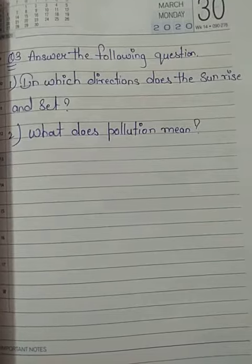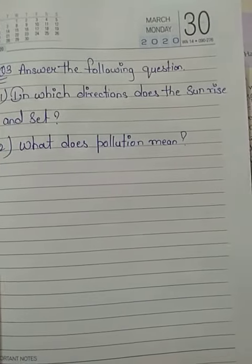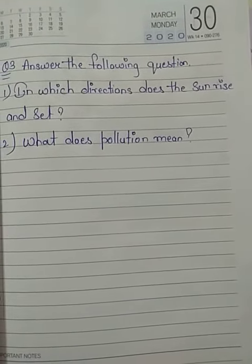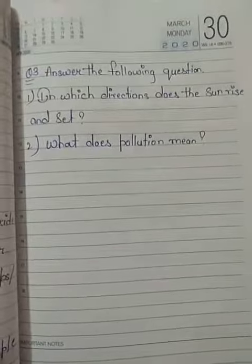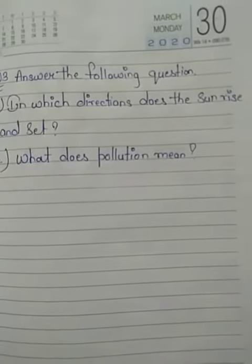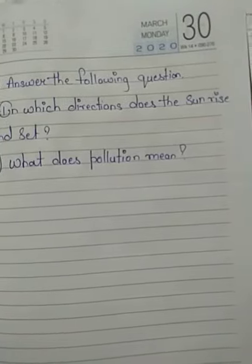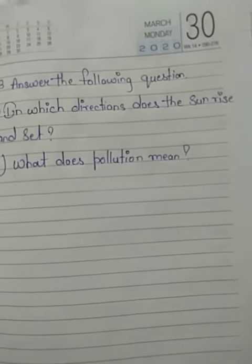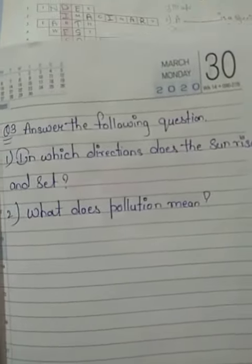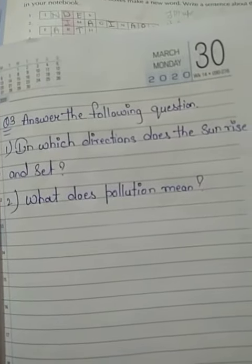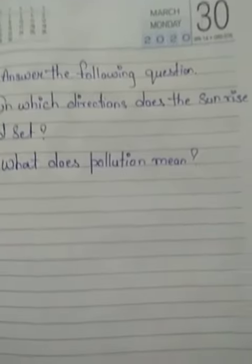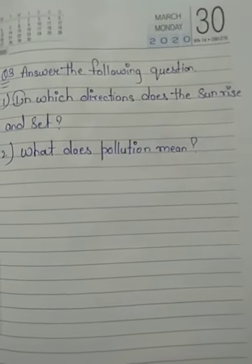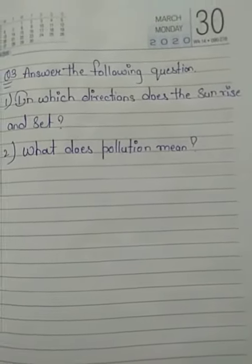Question number three is answer the following questions. The first one is: in which direction does the sun rise and set? The answer is: the sun rises in the east and sets in the west.